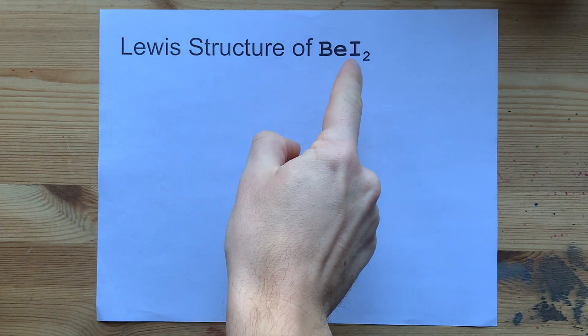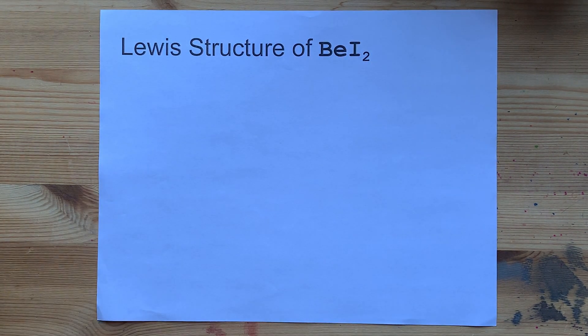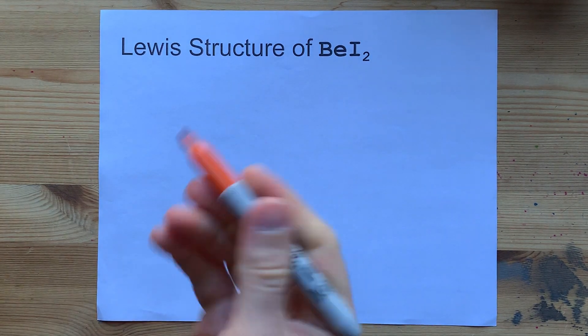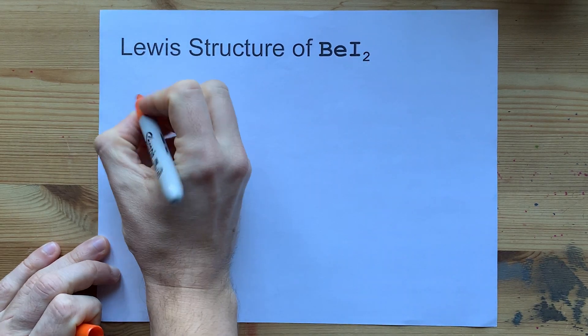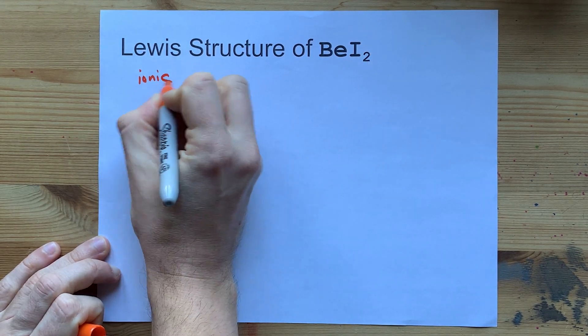Lewis structure of beryllium iodide, BeI2. Well, it's complicated. You might think that beryllium, a metal, and iodine, a non-metal, would combine to make an ionic compound.